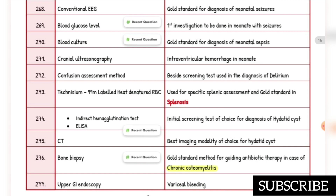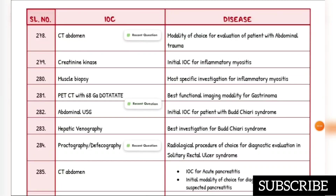Gold standard method for guiding antibiotic therapy in case of chronic osteomyelitis is bone biopsy. Investigation of choice for variceal bleeding is upper GI endoscopy. Modality of choice for evaluation of patient with abdominal trauma is CT abdomen. Initial investigation of choice for inflammatory myositis is creatine kinase. More specific investigation for inflammatory myositis is muscle biopsy.